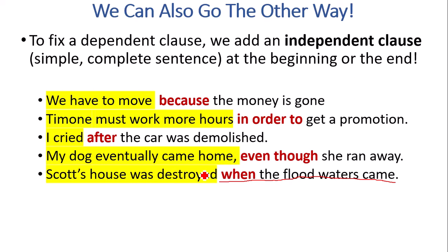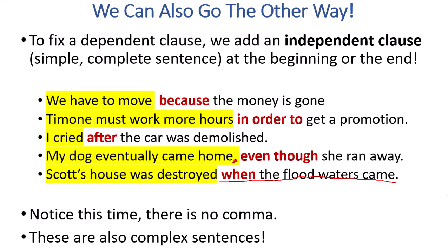My dog eventually came home, even though she ran away. Scott's house was destroyed when the floodwaters came. If you were fixing this in real life and you had a sentence like, when the floodwaters came, it would be up to you. Do you want to have that first? When the floodwaters came, comma, Scott's house was destroyed. Or do you think this sounds better? Scott's house was destroyed when the floodwaters came. You notice no comma. And they're also complex sentences. They still have that dependent marker word, that conjunction there in the red every time. And we have our independent clause in the yellow added to that dependent clause fragment. So they're all fixed.